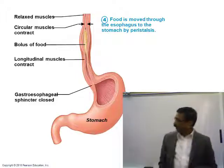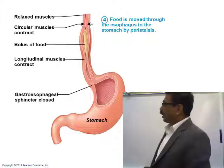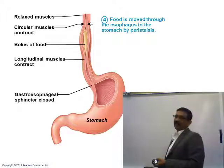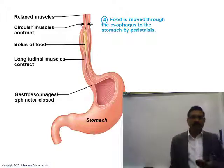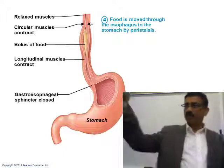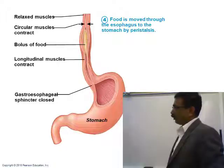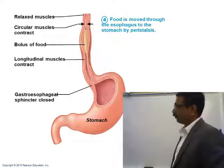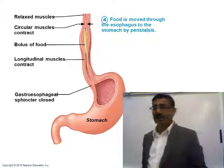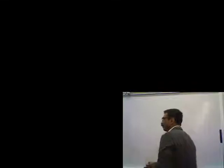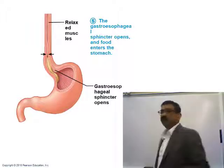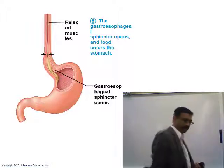At the lower end of the esophagus, there is another sphincter called the gastroesophageal sphincter. That sphincter is closed while food travels down the esophagus. When the food approaches the stomach, the gastroesophageal sphincter opens to let the food enter. That is how deglutition or swallowing of food occurs.